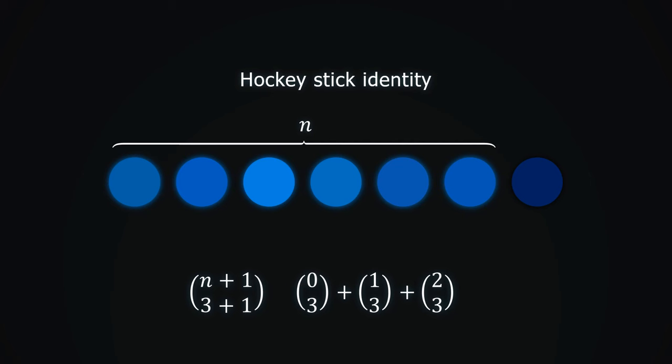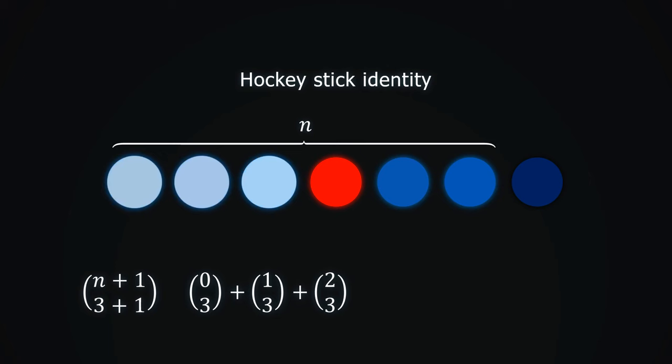When the red object is in the fourth place, then we can take 3 objects from 3 available, in just one way. We will write this as 3 choose 3, to make the pattern clearer. Now the situation gets interesting.